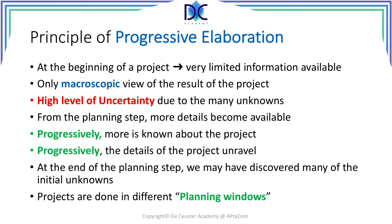The principle of progressive elaboration: when we start with a project, the information we have about the totality of the project is very limited. We have a macroscopic view of what the project should look like at the end when it is completed. There is a high level of uncertainty because there are still many unknowns. Once we start planning, more and more details become available — progressively more is known about the project and the details of the project unravel.